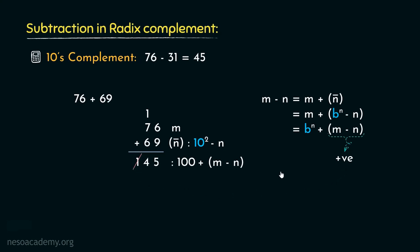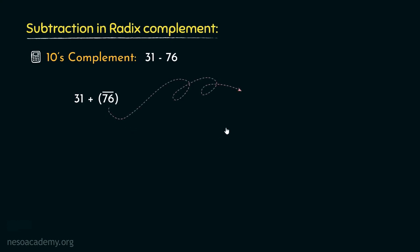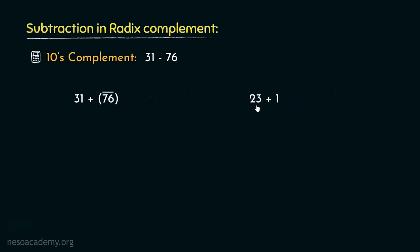Let's explore the other side. Let's perform the subtraction 31 minus 76. The subtraction will be performed as 31 plus the negative inverse of 76. This negative inverse — that is, the 10's complement of 76 — can be obtained by first calculating the 9's complement of 76 and then adding 1 to it. 9 minus 6 is 3 and 9 minus 7 is 2. Therefore, the 9's complement of 76 is 23, and 23 plus 1 is 24, which is the 10's complement of 76.